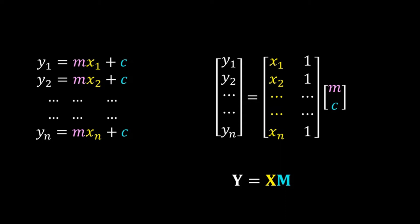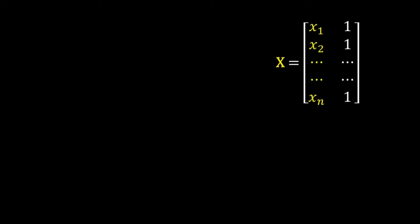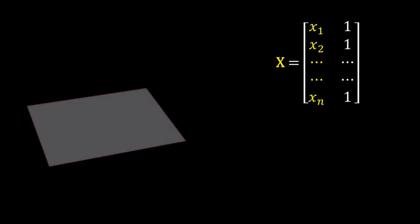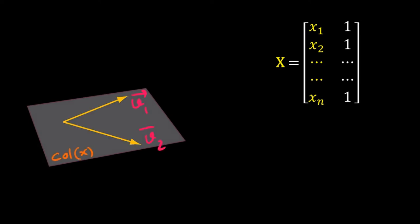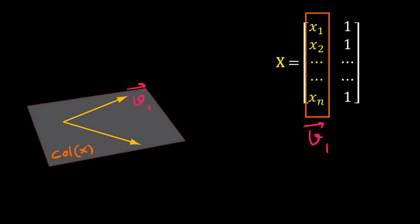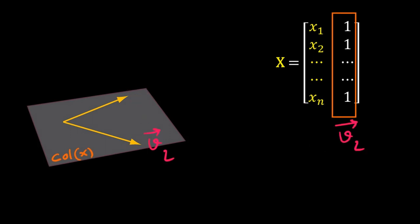Let's look at this problem from the perspective of geometry. Take the X matrix. Suppose this gray region is the column space of X. Let me draw two vectors v1 and v2 on this space. Suppose v1 is the first column of X and v2 is the second column of X.